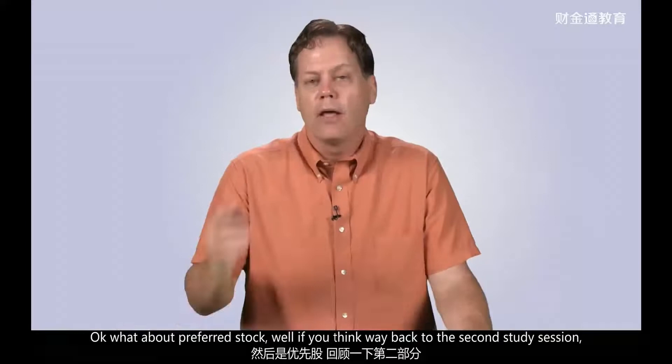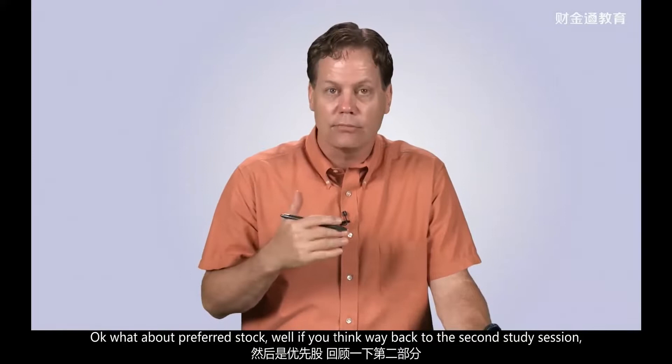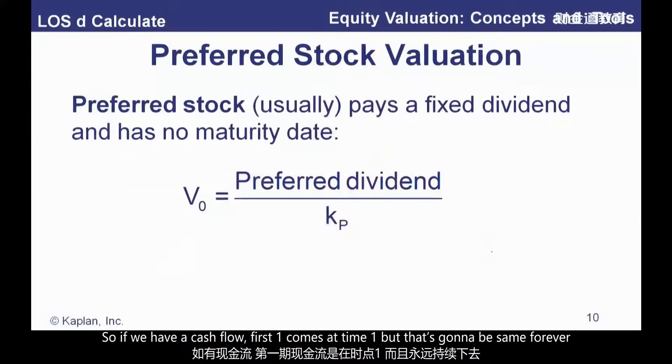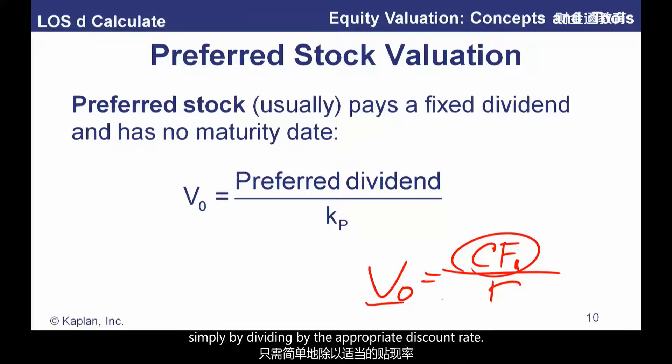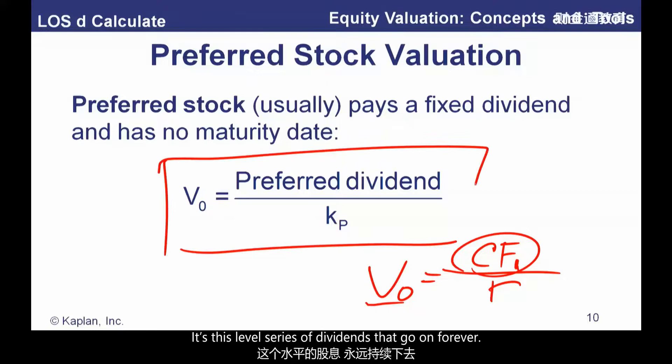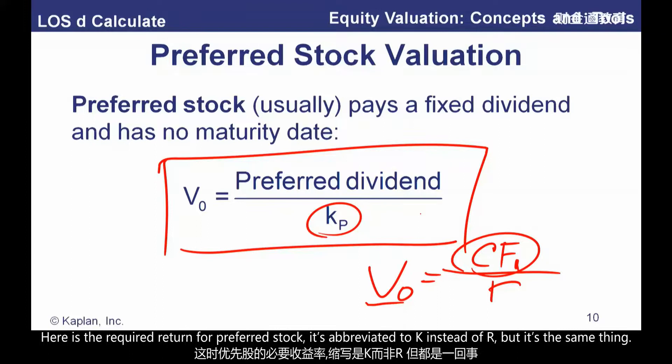What about preferred stock? If you think back to the time value of money section, there are things called perpetuities — a cash flow that starts at time one and is the same forever. We take that cash flow and divide it by the required return to get the value at time zero. For preferred stock, this is that level series of dividends going on forever. Here the required return is abbreviated K instead of R, but it's the same thing — cost of capital, opportunity cost of capital, required return — all the same in finance.